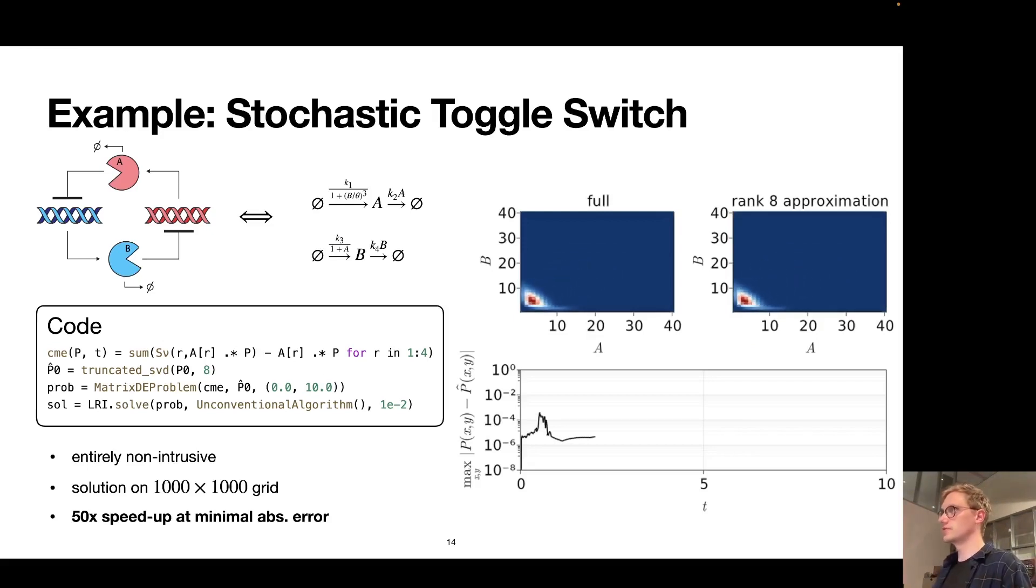This is of course not the only interesting application of these ideas. I personally find applications in the realm of stochastic chemical kinetics very intriguing. Sadly I don't have time to talk about this in much detail, so I just wanted to show you that for this example here we can speed up simulation by about a factor of 50 while incurring minimal, arguably inconsequential, amounts of error.